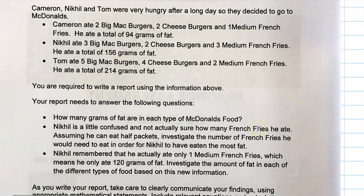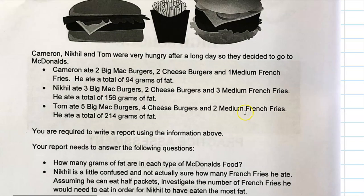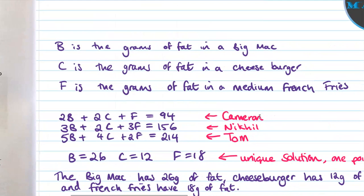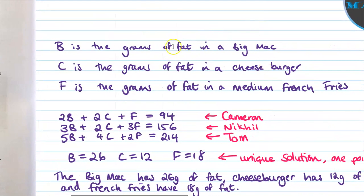So let's take a look at what we do first. We've got this information here about the number of different items consumed and the total amount of fat. So we need to put them into a set of equations, which I've got over here. So B is the grams of fat that's in a Big Mac, C is the grams of fat in a cheeseburger, and F is the grams of fat in medium French fries. Now, you always have to start by defining what the thing is that you're going to go on and use in your equations.